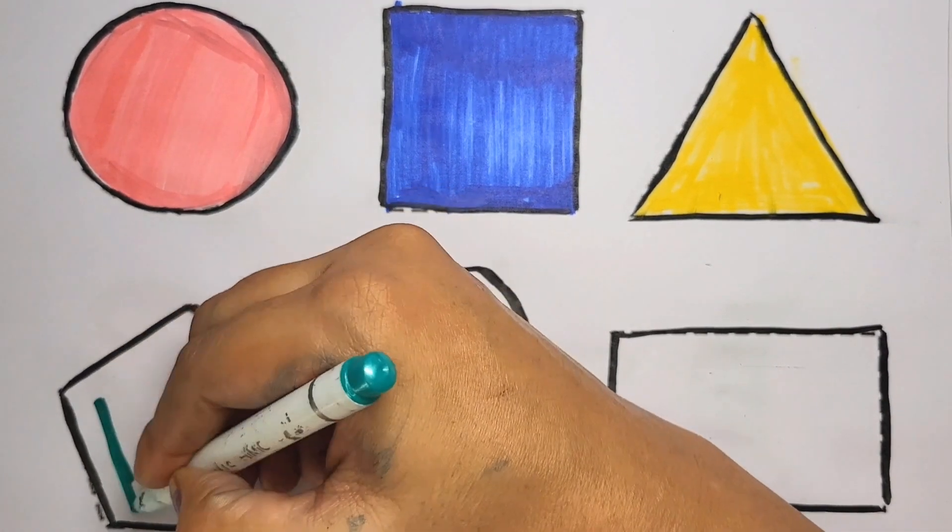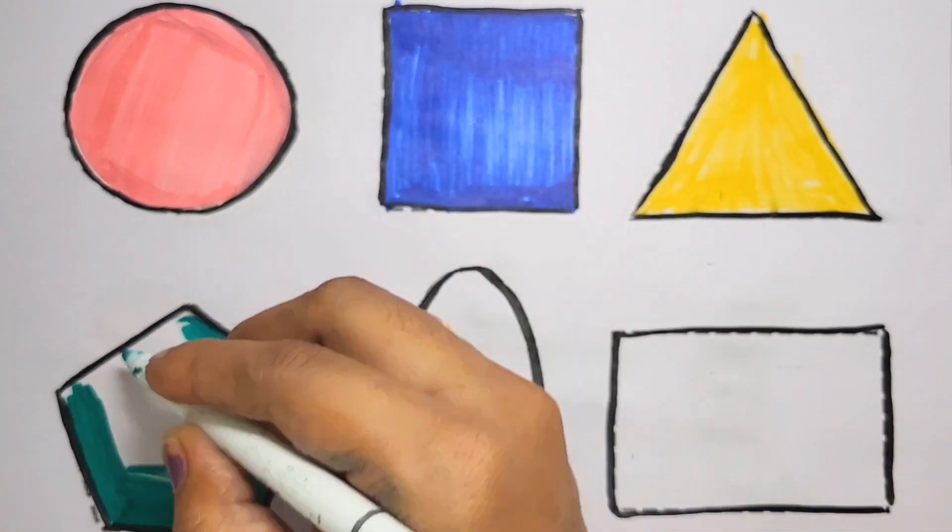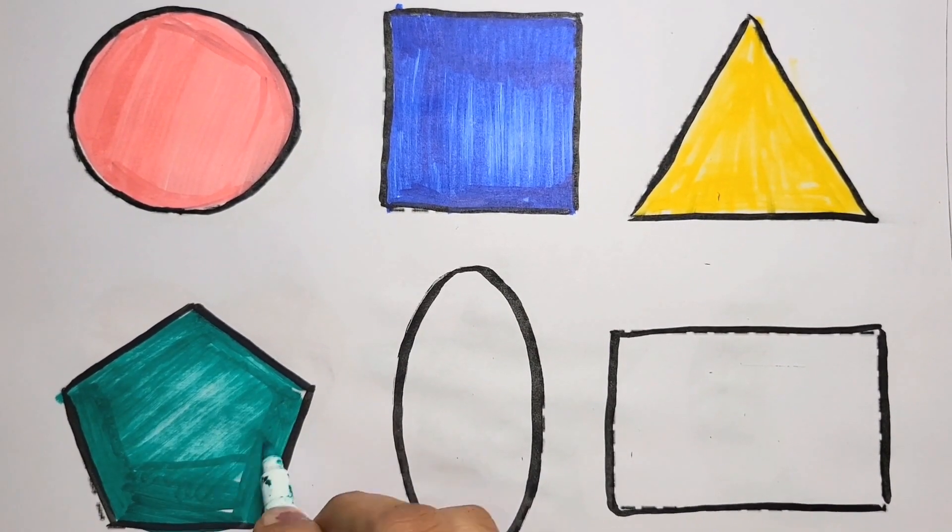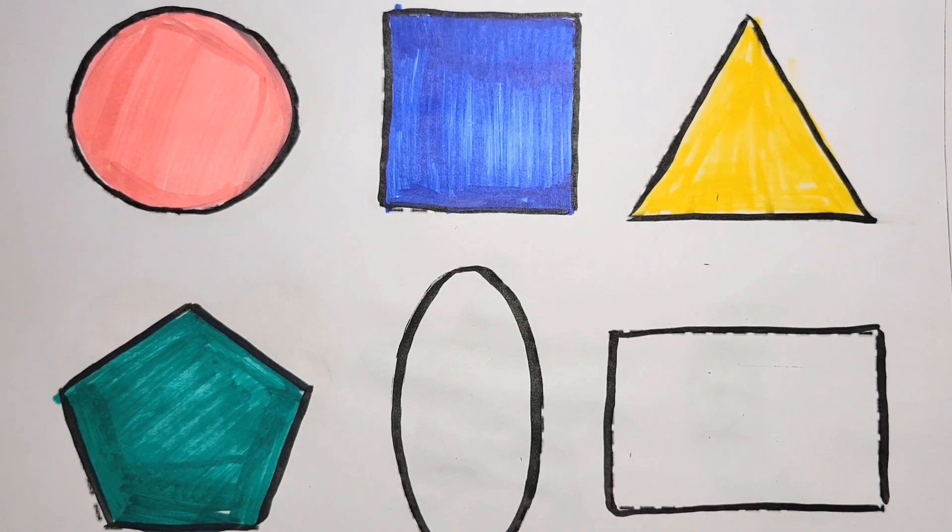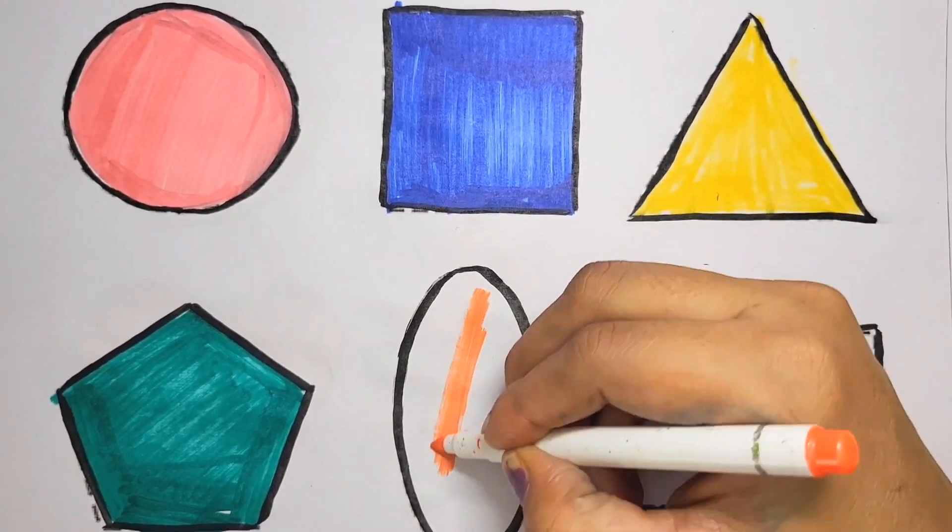Green color pentagon. Orange color oval.